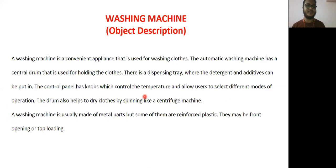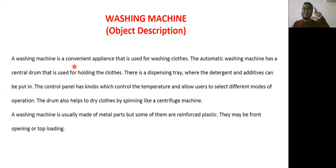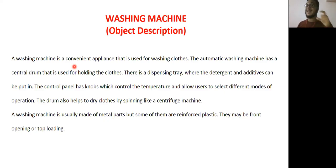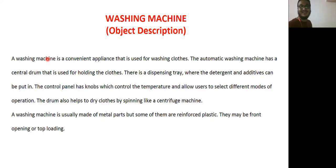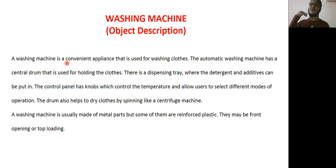A washing machine is a convenient appliance used for washing clothes. The automatic washing machine has a central drum. Just like a technical guru brings a mobile phone and talks about that brand, similarly we describe the washing machine. When we speak, it's different from when we write — language matters a lot in writing. So, the washing machine is a convenient appliance used for washing clothes. What is the use? Is it convenient? It is an appliance for washing clothes.